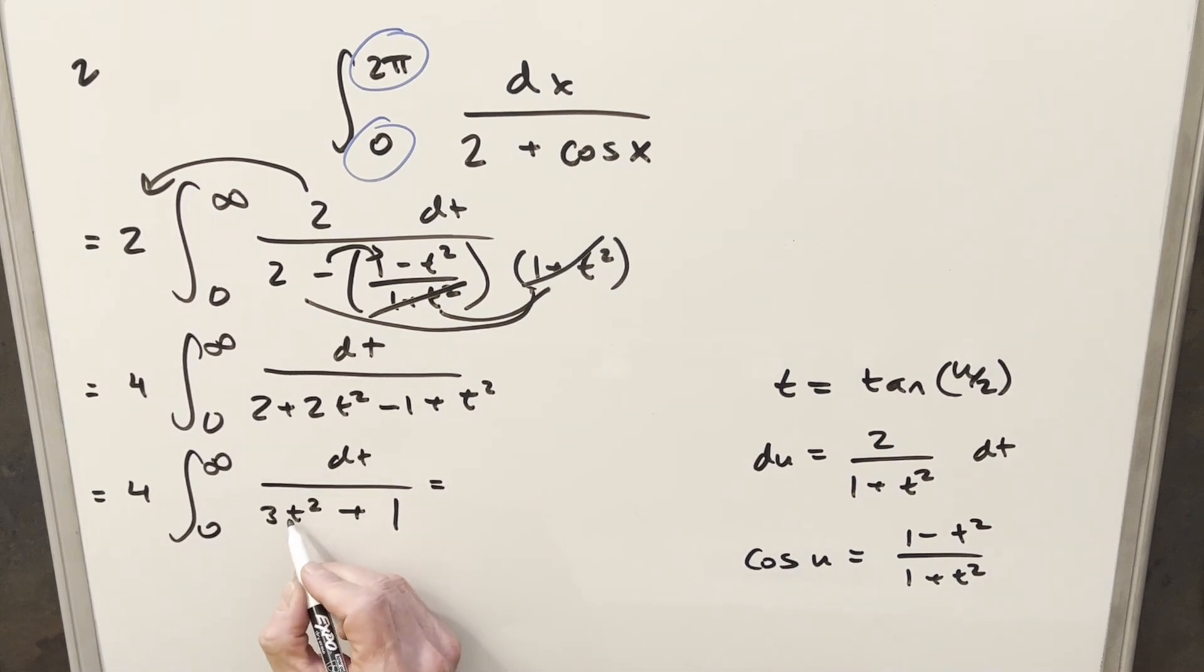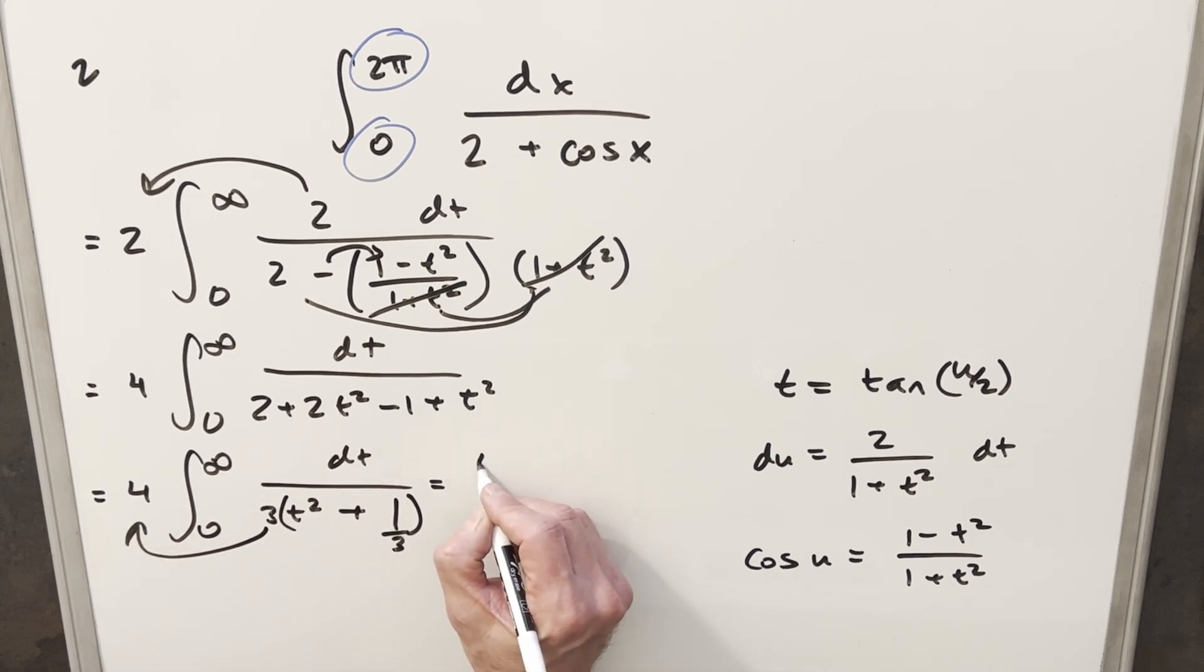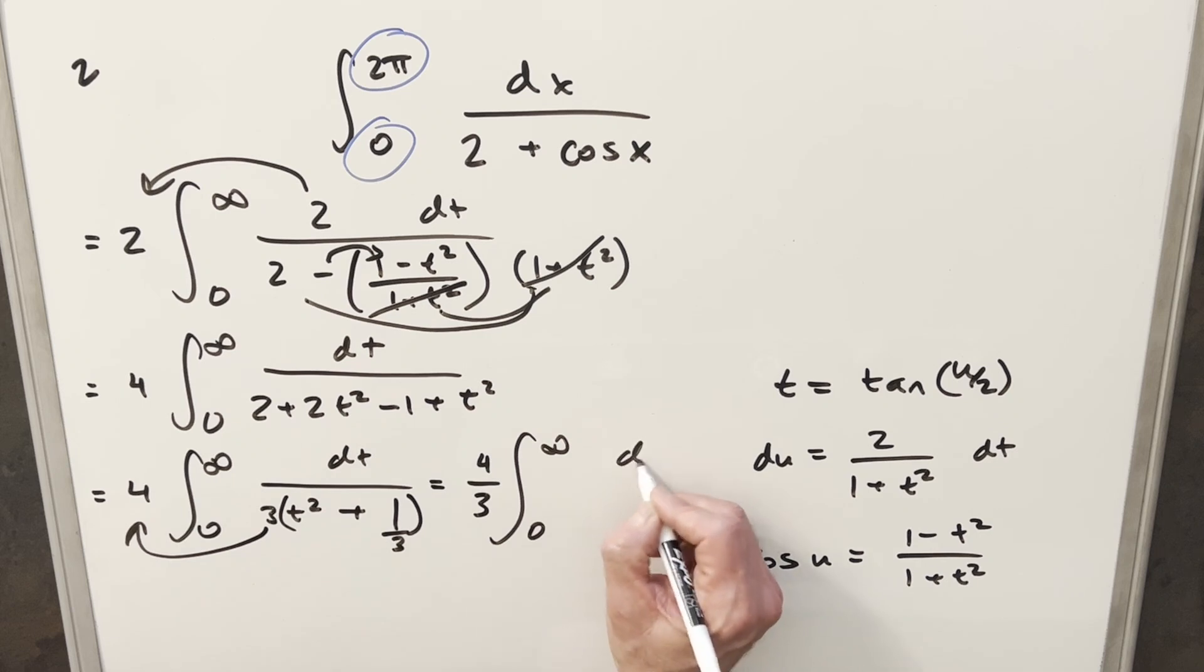But what I want to do here is I could actually factor out a 3. So we can write this. I can turn this into like a 1 third right here and rewrite this. But I want to take this 3 out front. So when I do that, it's going to come out in the denominator. So this is going to become 4 thirds. And then we're going to have this integral. But then this is going to become just t squared plus 1 over 3. But what I'll do, I'll take this 1 over 3 and I'll rewrite this as 1 over square root of 3 all squared. But then this integral is in exactly the right form for arctan.